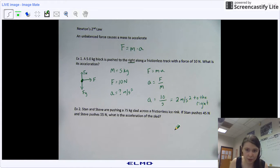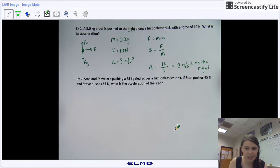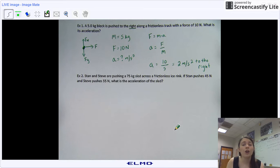We're going to take this one step further. Not too much further, though. We have example two. Stan and Steve are pushing a 75 kilogram sled across a frictionless ice rink. If Stan pushes 45 newtons and Steve pushes 55 newtons, what's the acceleration of the sled?